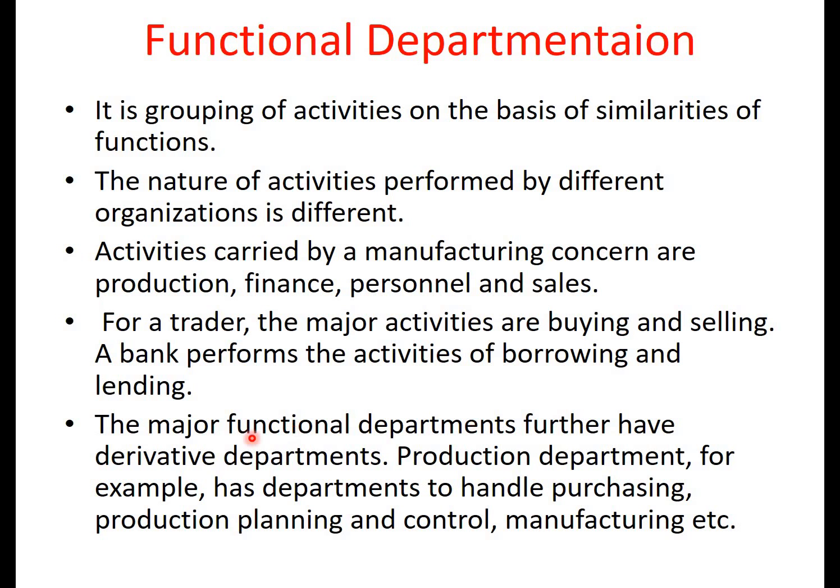Major functional departments further have derivative departments. For example, the production department has sub-departments to handle purchasing, production planning and control, manufacturing, etc. So the various departments a production-oriented organization deals with are production planning, purchasing, control, and manufacturing. Activities or tasks having similar functions are grouped on the basis of their functionality.